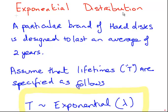So this question is, a particular brand of hard disks is designed to last an average of 2 years. Assume that the lifetimes, which we're going to denote capital T, although sometimes I have a bad habit of using capital X, just watch out for that. Capital T is how I'm supposed to write it, and that's the lifetime. So if a disk lasts, let's say, 2 years, capital T is equal to 2.